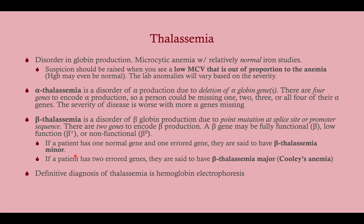Alpha-thalassemia is due to disordered production of alpha hemoglobin from a deletion of the alpha globin genes — for Step 1, you should know it's due to a deletion. There are four genes encoding alpha production, two on either chromosome, so you can be missing one, two, three, or all four. If you're missing all four alpha genes, you die in utero. The severity worsens the more genes you're missing. Beta-thalassemia is due to a point mutation at a splice site or promoter sequence, and because of this there are a variety of severities despite having only two genes.